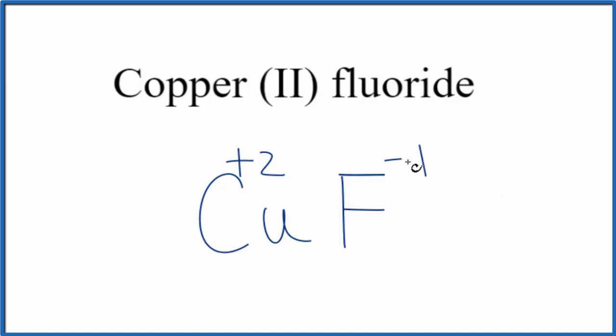There's a little bit of a trick we can do. We can move the 2 down here, and the 1 over here. We don't write the 1 by convention, and we end up with a formula for copper (II) fluoride, CuF2. It's called the crisscross method.